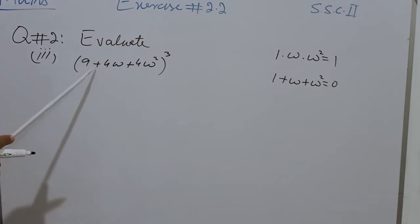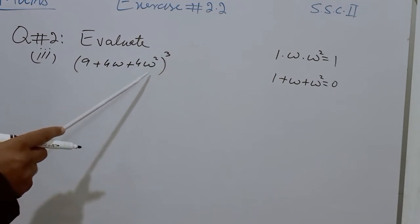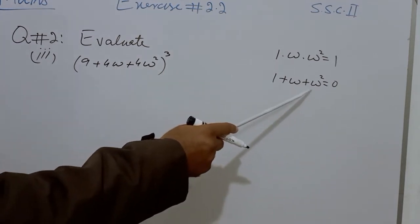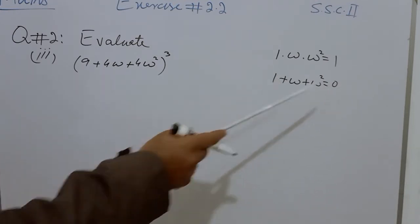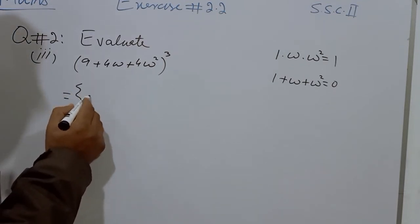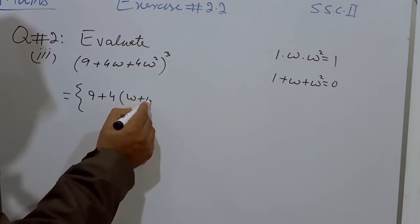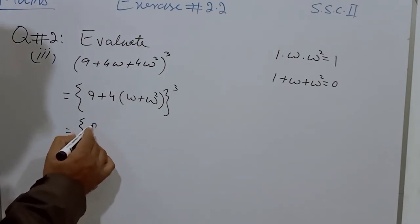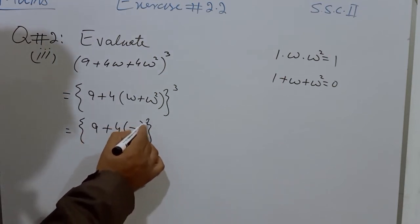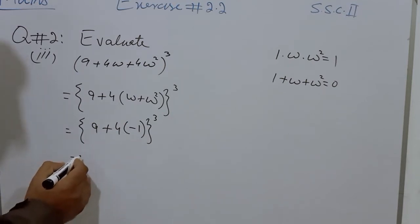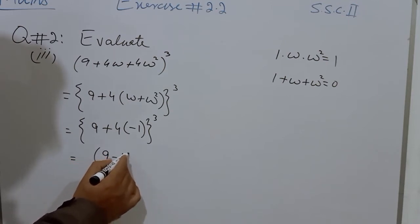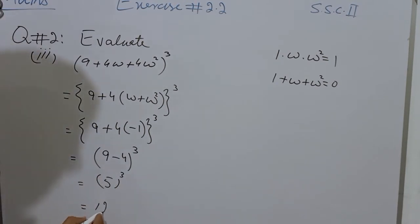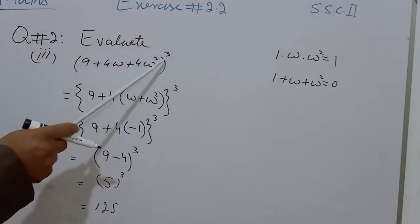The third part of Question 2 is (9 plus 4omega plus 4omega squared) to the power of 3. We take 4 as common from the last two terms, giving (omega plus omega squared) in the brackets. Omega plus omega squared equals minus 1. So it becomes (9 plus 4 times (minus 1)) to the power of 3. Four multiplied by minus 1 means minus 4, so it is (9 minus 4) to the power of 3. Nine minus 4 means 5, and 5 cubed means 125. So the value of (9 plus 4omega plus 4omega squared) to the power of 3 is 125.